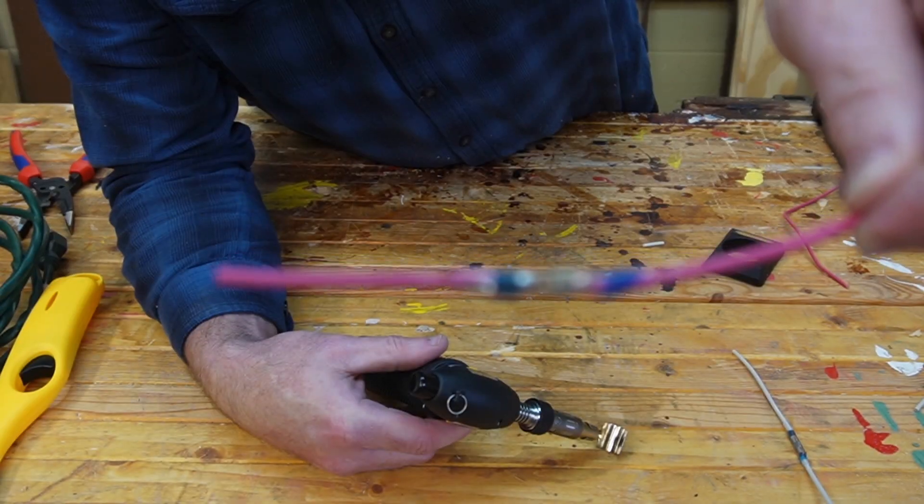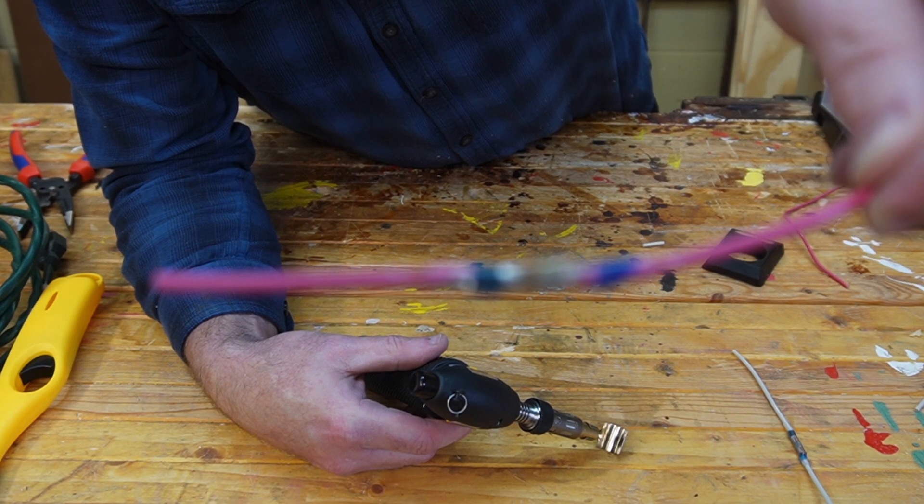I don't know whether you can see that on camera. I really need a better lens to do these kinds of things with. But the solder has flowed between the two conductors there and soldered them together. That's a good electrical joint that has cooled off a bit.